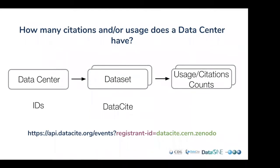Data centers are in essence a collection of datasets. They register the UI metadata but in many cases they are completely separated from the entity that collects usage and citation data. In EventData, one can identify data centers by a registered ID that is connected to datasets, which are linked to usage stats and citation stats — so we have two degrees of separation. Using this registered ID, one can ask questions such as: how many citations or usage does a data center have, and obtain all the citations and data usage stats associated with that data center and all its datasets.